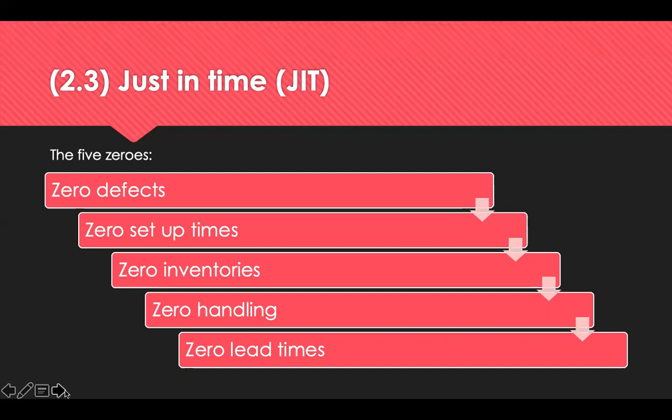Zero handling involves process mapping tools to identify where operations are duplicated, with systems redesigned to reduce or eliminate handling operations. Zero lead times is the ultimate aim of JIT, optimising small batch sizes coupled with increased flexibility due to shorter lead times. The benefits of JIT are that if materials or components are produced or acquired immediately before they're needed, they're not being held in stores and all the costs associated with stock holding are eliminated. Additional benefits include reduced scrap costs, right-first-time quality, faster response to engineering changes, reduced back-office costs, better productivity, and reduced inventory of purchased parts.